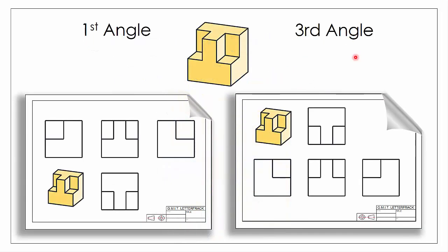Here we have an object represented in first angle and here in third angle. The object is going to be represented in exactly the same way — the same views are given in both, but what changes is the orientation of those views relative to our front elevation. If we imagine looking into the front of the object, here's our front elevation in first angle and here it is in third angle.